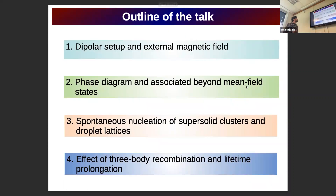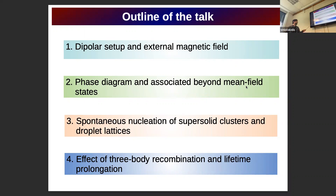So this brings me to the outline of my talk. First, I will discuss the dipolar setup under consideration. Then I will move on and describe the phase diagram of the system and briefly describe the corresponding beyond-mean-field states that arise. Subsequently, we will elaborate on the spontaneous nucleation of supersolid clusters and droplet lattices. And finally, we argue that this rotating magnetic field might facilitate the prolongation of the lifetime of droplets.